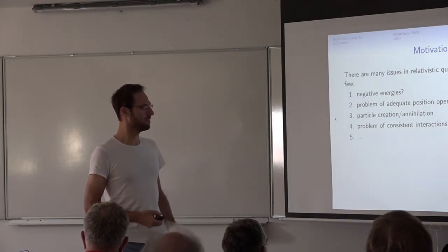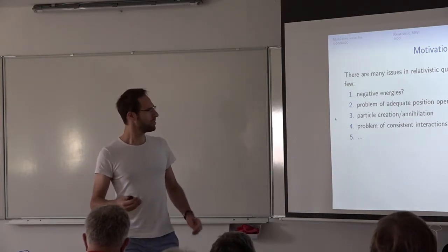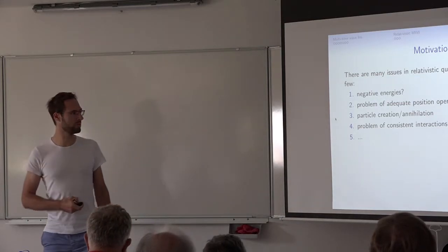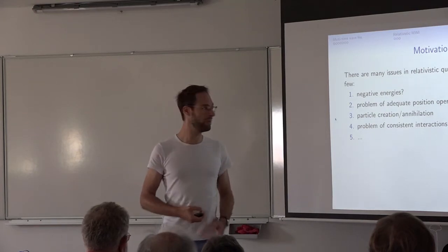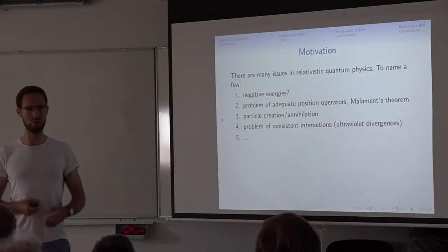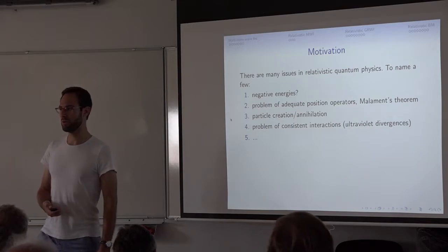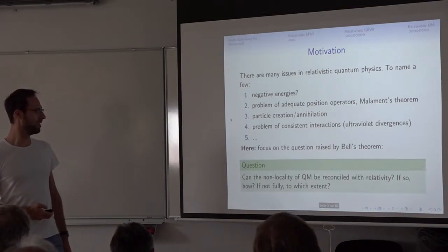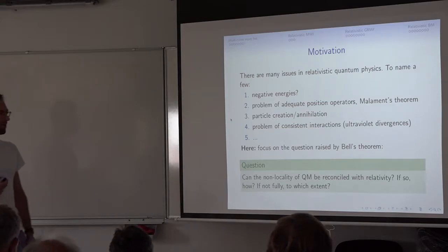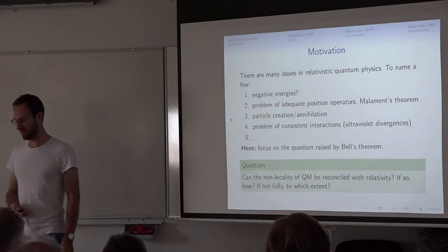What are appropriate position operators, connected with that in Many-Worlds theory, and also the question of how you ontologically understand how creation and annihilation happens? Then the problem of consistent interactions related to ultraviolet divergences in quantum field theories. There will be a lot of issues coming up with quantum field theory, in addition to the usual ones: the measurement problem, nonlocality, contextuality, and all of them. Here I will focus on one question that Rody already mentioned: can the nonlocality of quantum mechanics be reconciled with relativity, and if so how, and if not fully, to which extent? We'll discuss that for the different theories we have studied here.